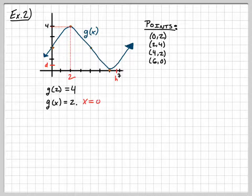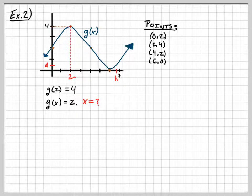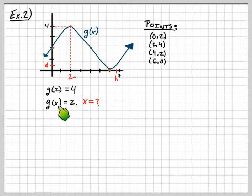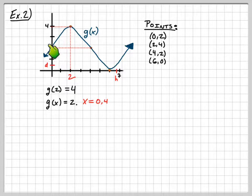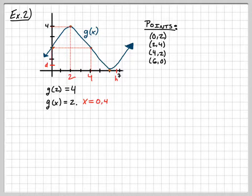Next question: g of what value gives you 2? Now I'm looking for an x value where the output will be 2. Looking at the graph at y equals 2, I can trace across and find that there are two answers. The two x values that give an output of 2 are x equals 0 and x equals 4.